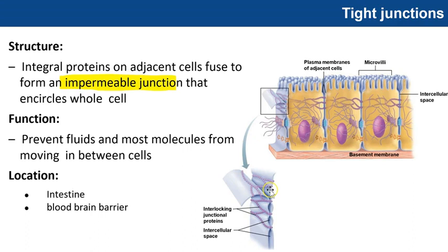For example, tight junctions are found between the epithelial cells lining the digestive tract of the intestine. In this way, they keep digestive enzymes and microorganisms in the intestine from seeping into the bloodstream. Tight junctions are also found in structures like the blood-brain barrier, forming an impermeable junction so that toxins cannot pass through the blood to our brain.